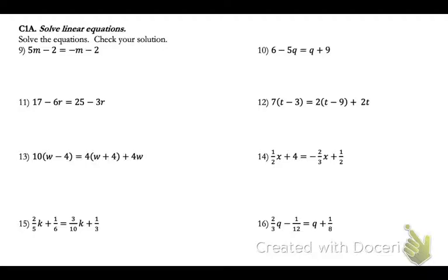So on number 9, we want to combine our m's on one side of the equal sign and our numbers on the other. So if we add the m over, we get 6m equals 0, and then divide both sides by 6, so m equals 0.